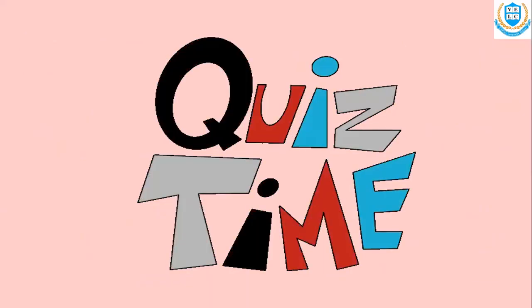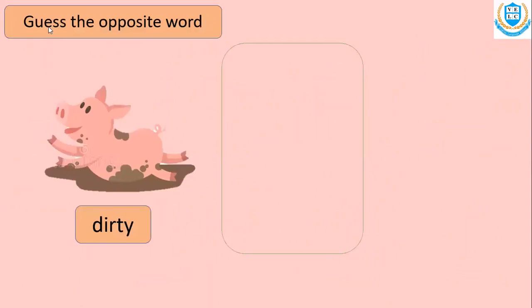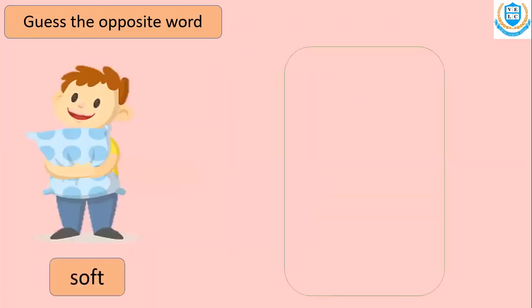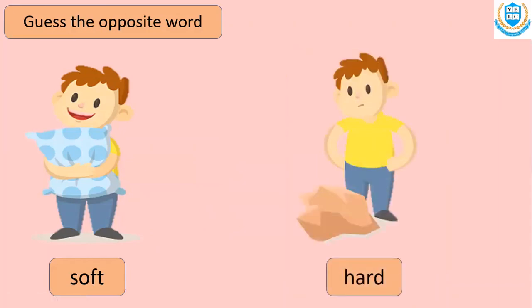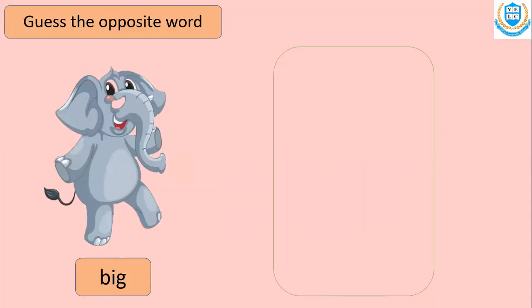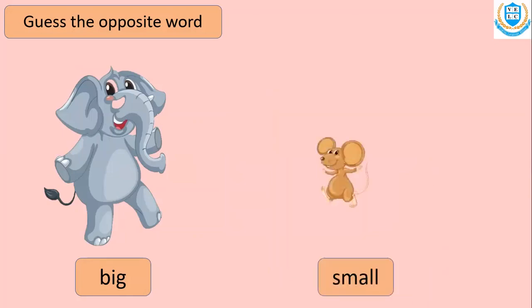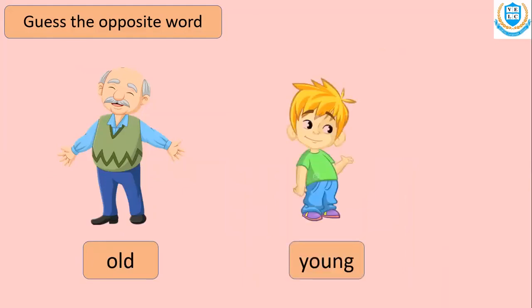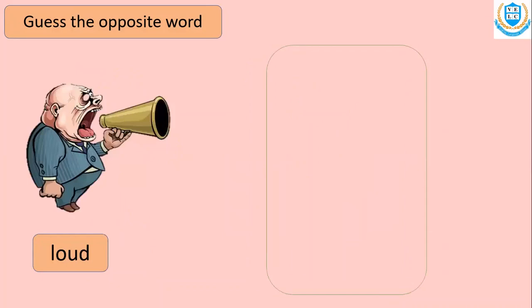Okay, quick quiz time! Everyone, you have to guess the opposite words. So the opposite word of dirty is — clean! Very good. Let's go next. The opposite word of soft is — hard! Very good. The opposite word of big is — small! The opposite word of old is — young! Good. So the opposite word of loud is — quiet! Very good.